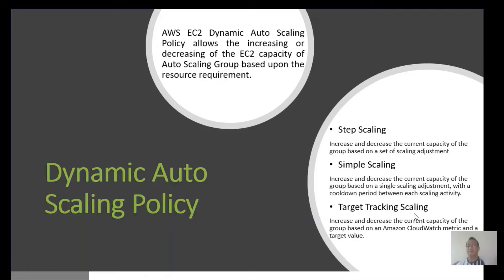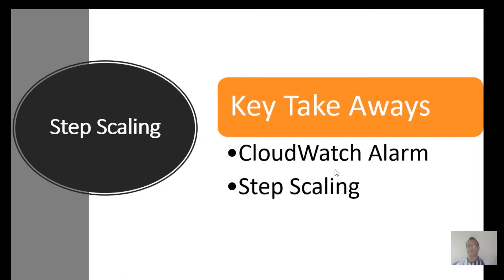Target tracking scaling increases or decreases the current capacity of the group based on an Amazon CloudWatch metric and a target value. When it reaches that particular utilization level, a certain number of EC2 instances will be added. That is called target tracking scaling policy. Today we'll be doing step scaling, and the key takeaways are understanding CloudWatch alarms and step scaling.